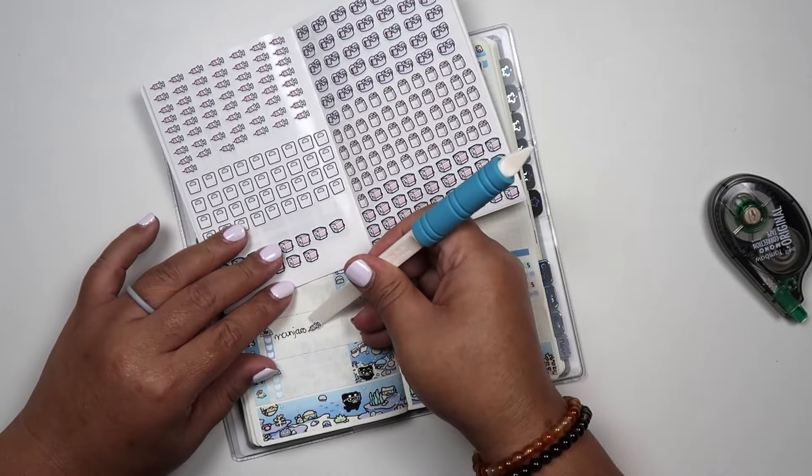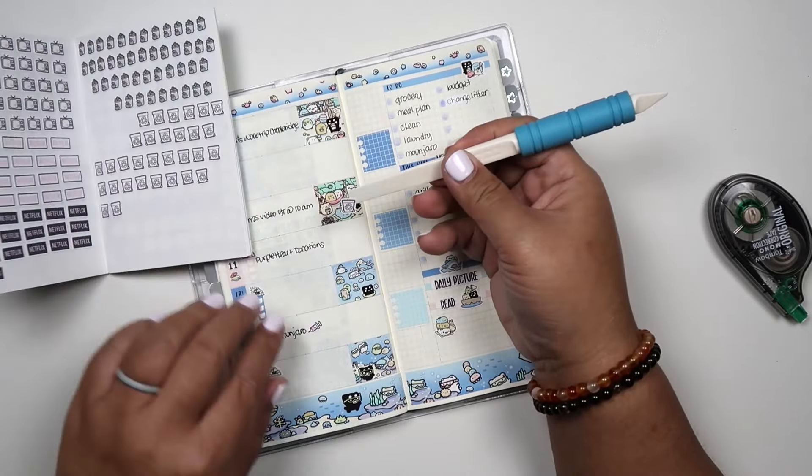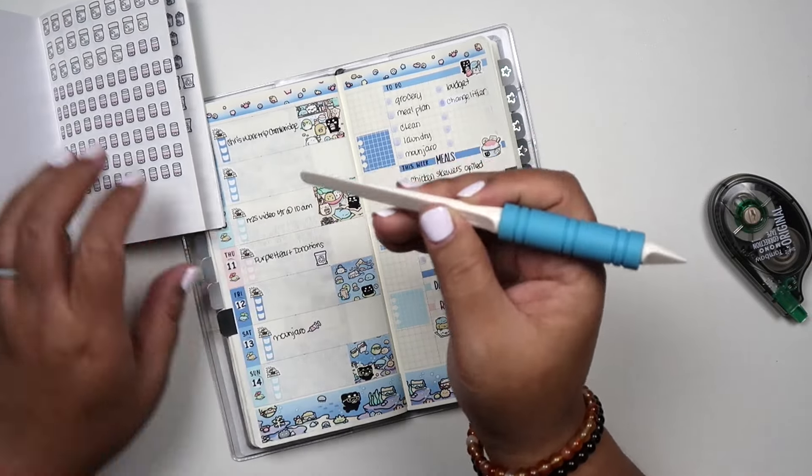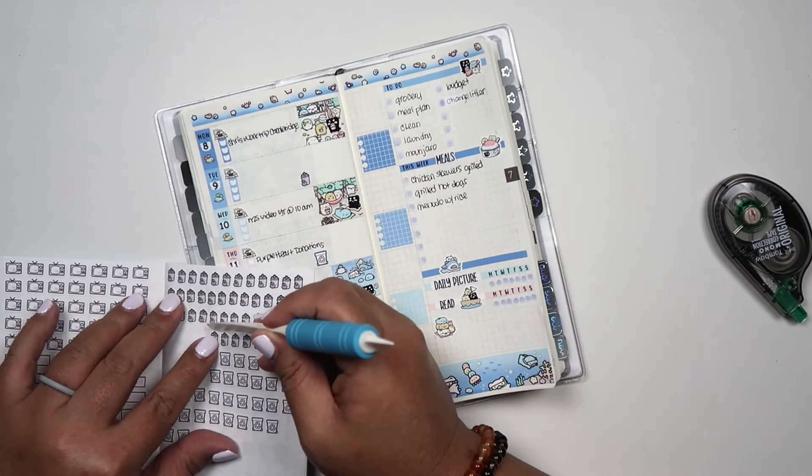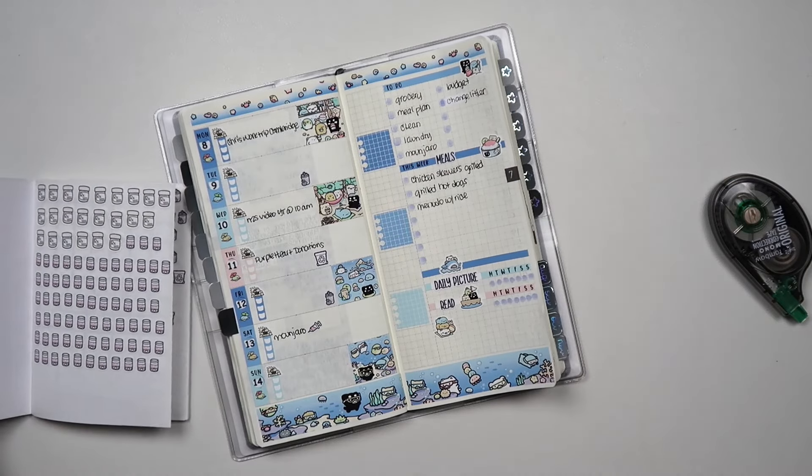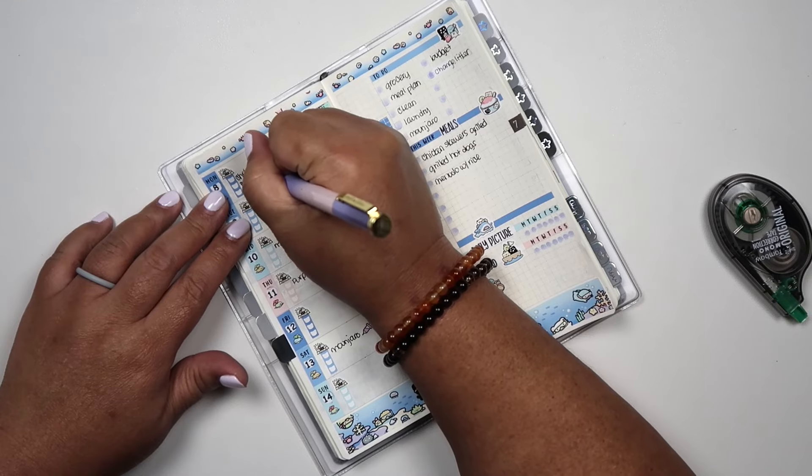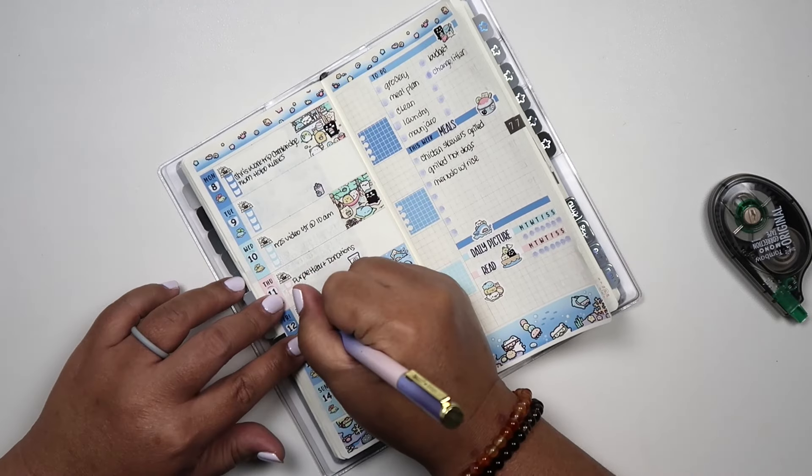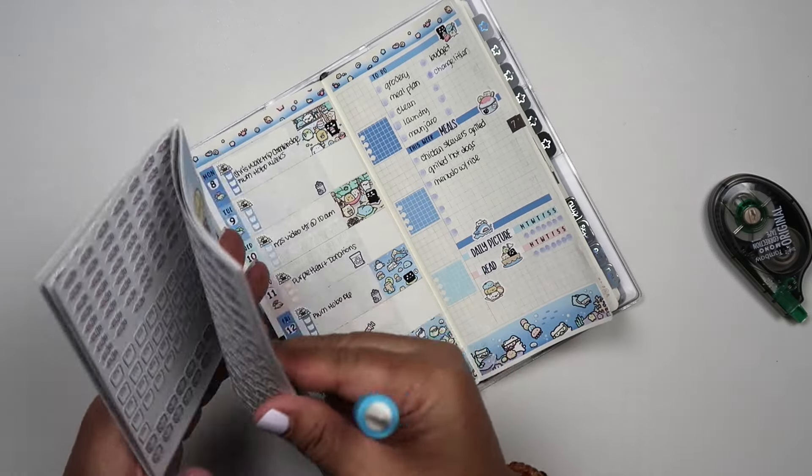So I did mention this in my last video, but at the bottom right of my weeks, I started writing just a short summary of how my week went. So you'll see me put a sticker there. I think I put this week. So then I will write down like a memory and I really like that.